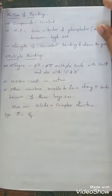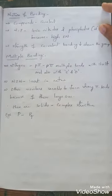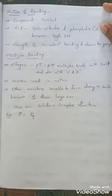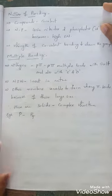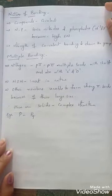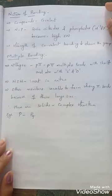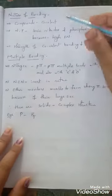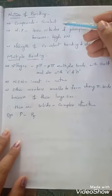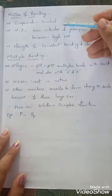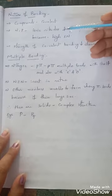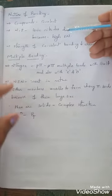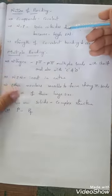Good morning, students. In this video I am going to explain about a few other general properties of group 15 elements. The next property is nature of bonding — that means how group 15 elements can form bonds and what type of bonds are formed by them.